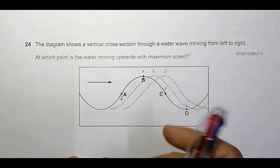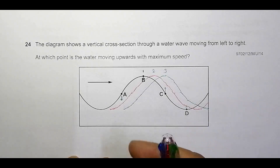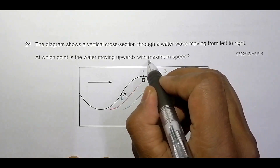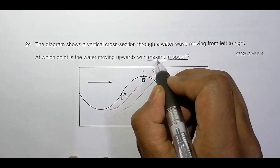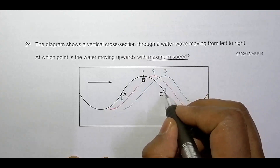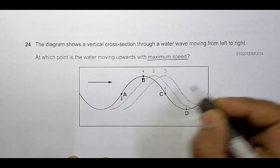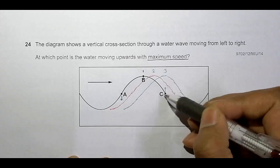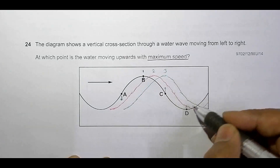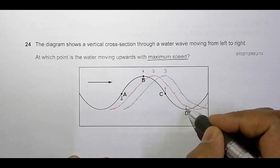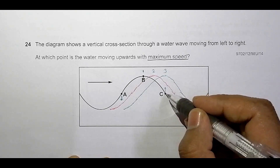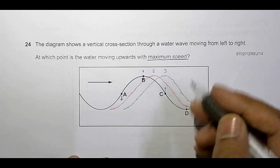Now another condition we have is to find where water is moving upward with maximum speed. The maximum speed always occurs in simple harmonic motion, like that of a wave, at the midpoint — the mean position where displacement is zero. At the edge, the speed is zero; at the middle, the speed is maximum.